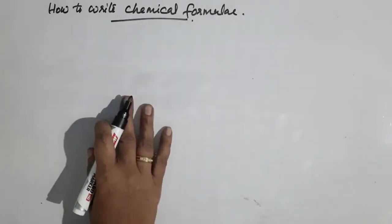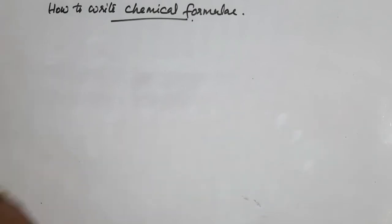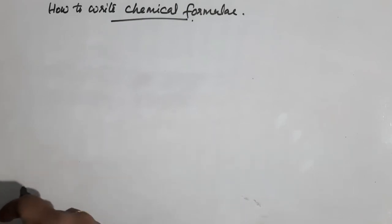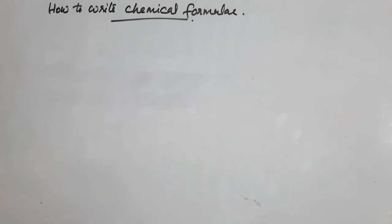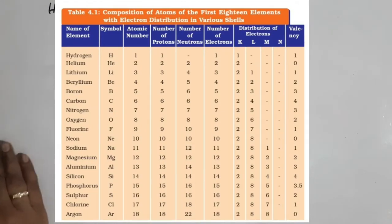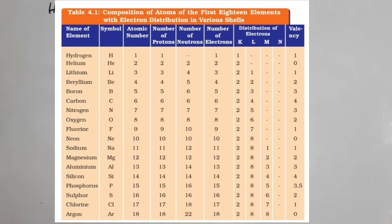We have started with valency. We are able to write the atomic number. In this and the next chapter, we will learn the valency table, then the chemical formula, and then the electronic configuration.